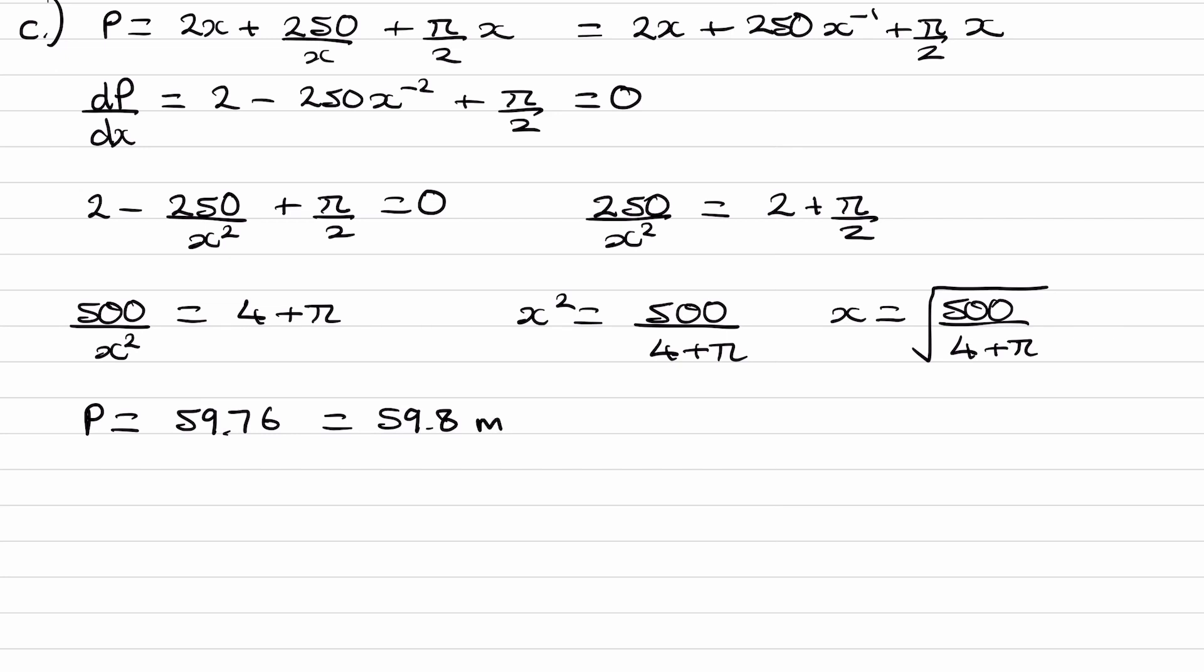But we also want to verify that this actually is a minimum. We can do that by double differentiating. d²P/dx². Differentiating what we have here one more time. The first term and the last term just differentiate to make 0. The middle term will give 500x⁻³. And 500x⁻³, or 500/x³, will always be positive for positive values of x. So if this is always positive, that means our gradient is always increasing. If our gradient is always increasing, our curve must look something like this. So this value of x and this perimeter must be the point of the local minimum.